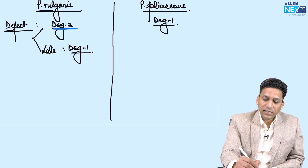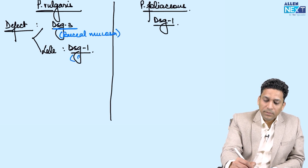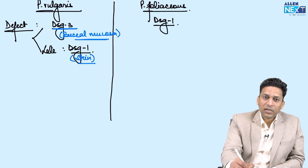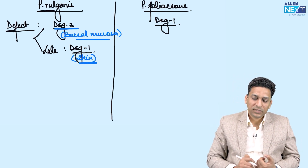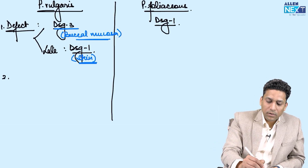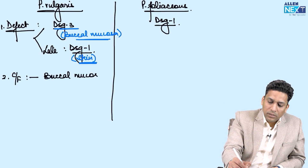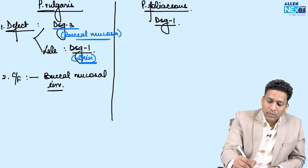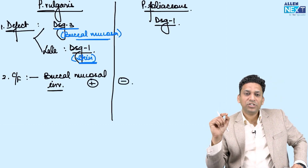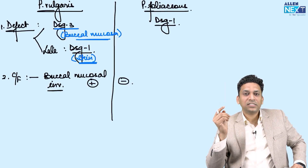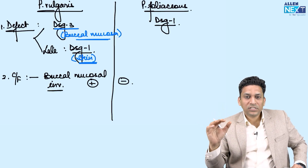Desmoglein 3 is mainly present in buccal mucosa, while Desmoglein 1 is mainly present in the skin. Because of this distribution, one very important differentiating feature between vulgaris and foliaceus is buccal mucosal involvement. Buccal mucosal involvement is seen in vulgaris but it is absent — always spared — in foliaceus.